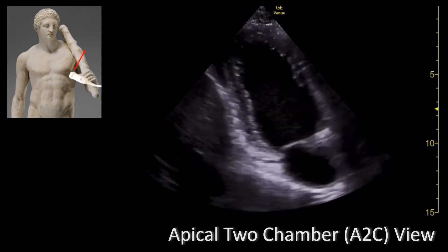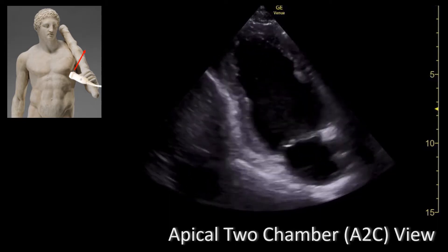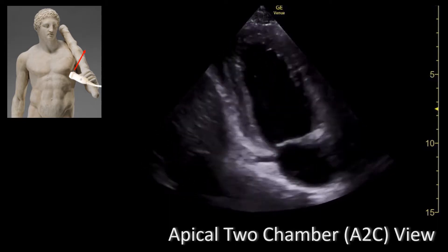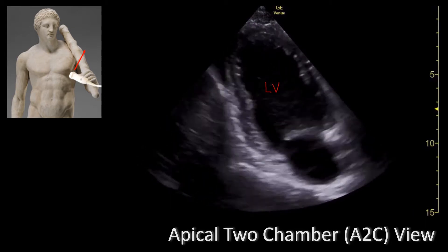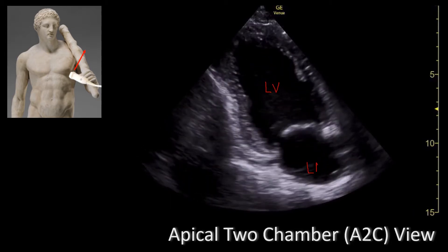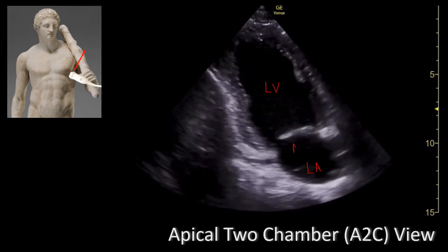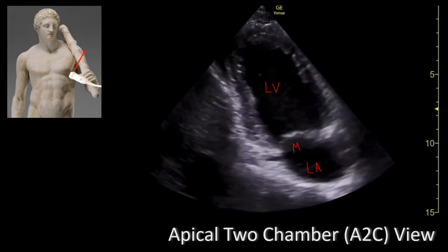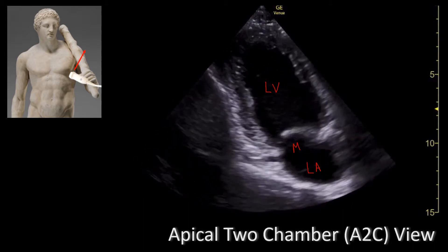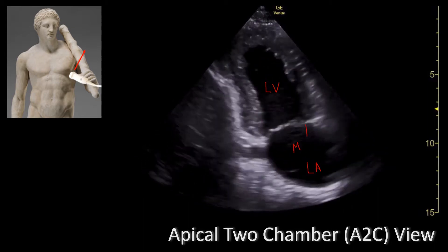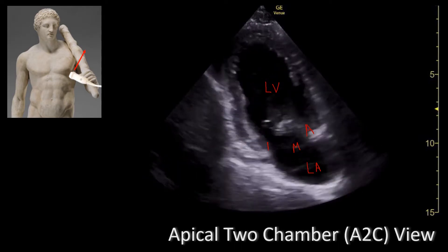Let's talk about the structures that we're looking at. Note that the apical two chamber view only focuses on the left side of the heart. Over here you have the left ventricle, and on the opposite side you have the left atrium. In between those structures you have the mitral valve, which has two leaflets: the anterior leaflet and the posterior leaflet. The anterior is going to be a larger leaflet and the posterior is going to be much smaller.